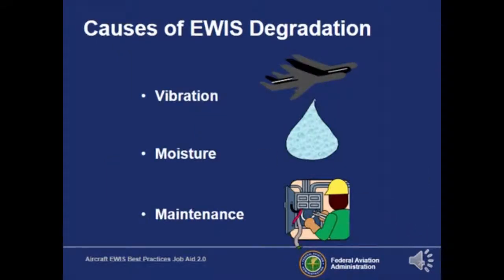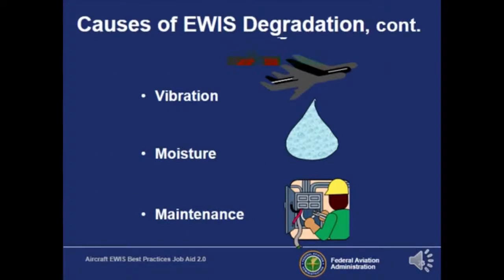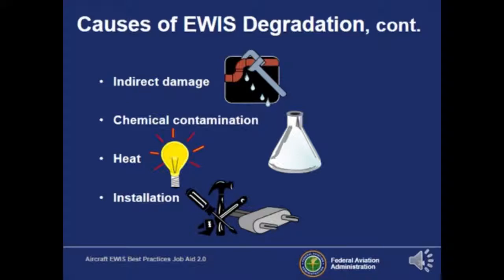More specific factors include vibration — an aircraft is constantly vibrating throughout its operation. We also have a lot of moisture; Hawaii's humid environment, combined with temperature changes causing condensation, means wires are subject to significant moisture damage. Maintenance can inadvertently break or snip wires. There could be indirect damage from other systems, such as fluids leaking on wiring. Chemical contamination from battery acid, heat, and improper installation can all cause the wiring system to degrade.